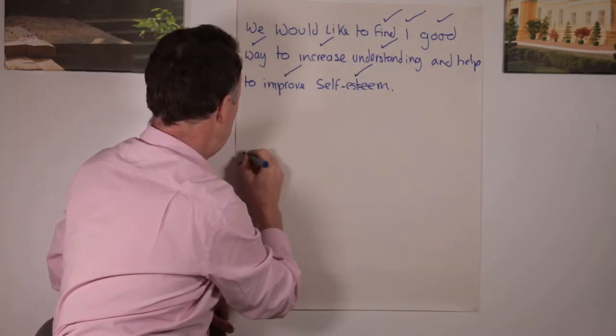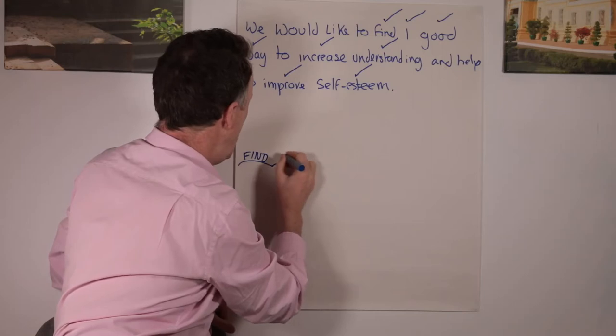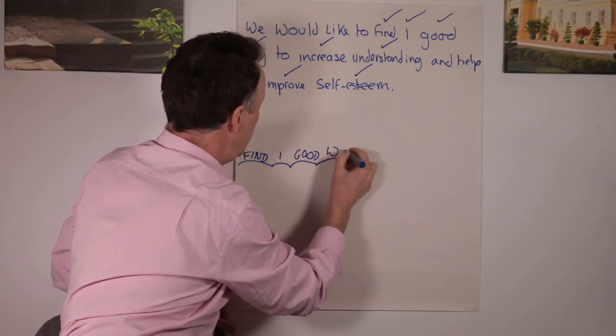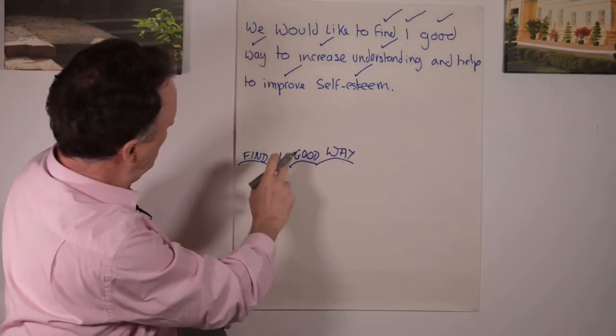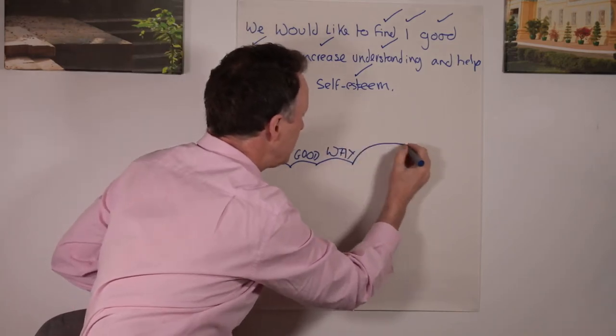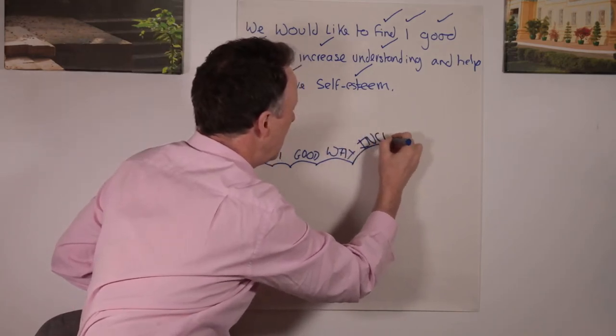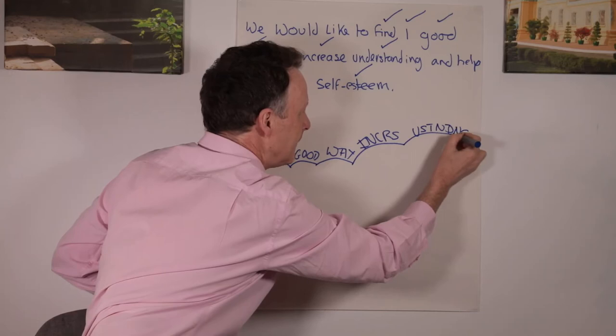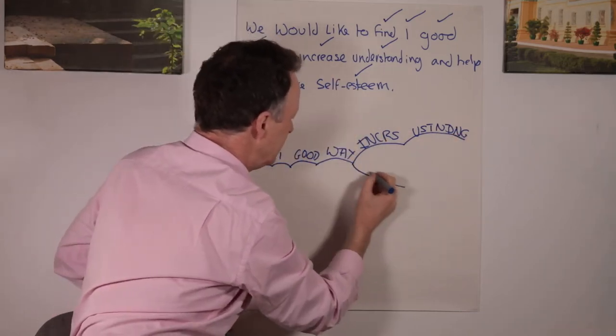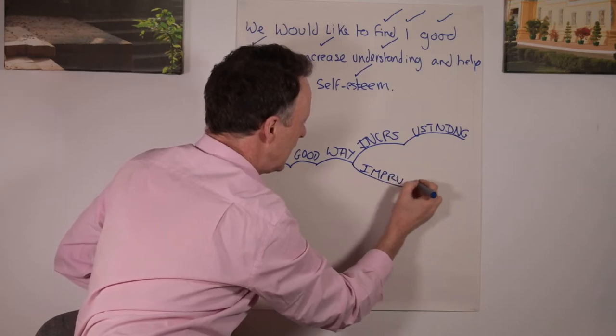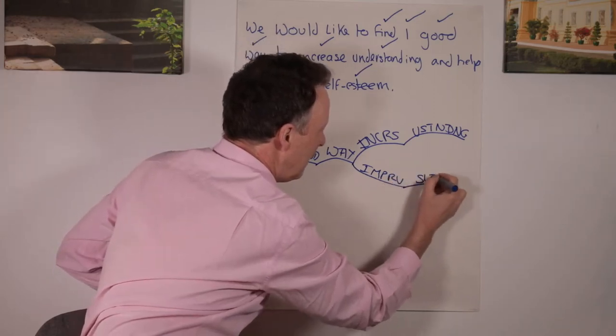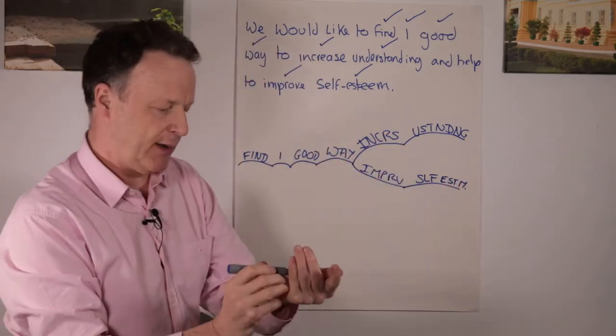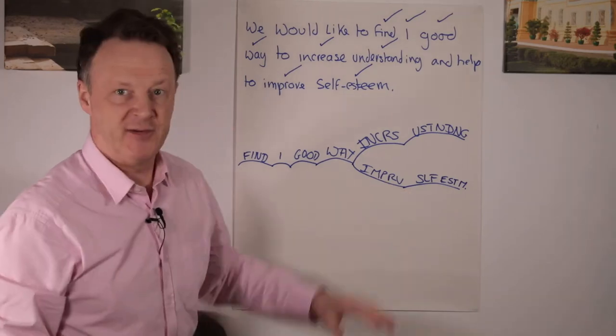So I would go find one good way. I would go find one good way. Increase understanding. Improved self-esteem. And I've abbreviated here, which is what I do normally. So I don't have to worry about spelling. Also, it makes it much faster to do.